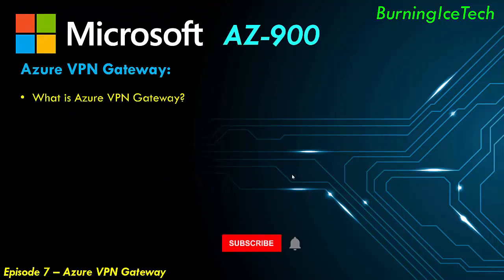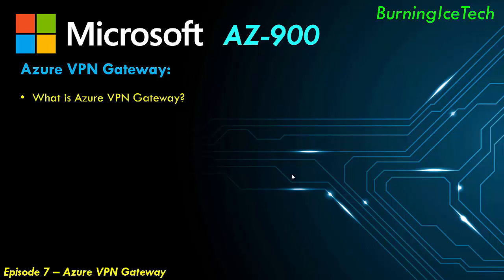First things first, what exactly is the Azure VPN gateway? For those of you that did not see my previous episodes, this actually just adds on to another topic called virtual networks. That component is an example of infrastructure as a service, which basically allows you to connect your components in the cloud to one another — components like virtual machines. If you would like to have your virtual machines communicate with one another in the cloud, one way to achieve that would be virtual networks.